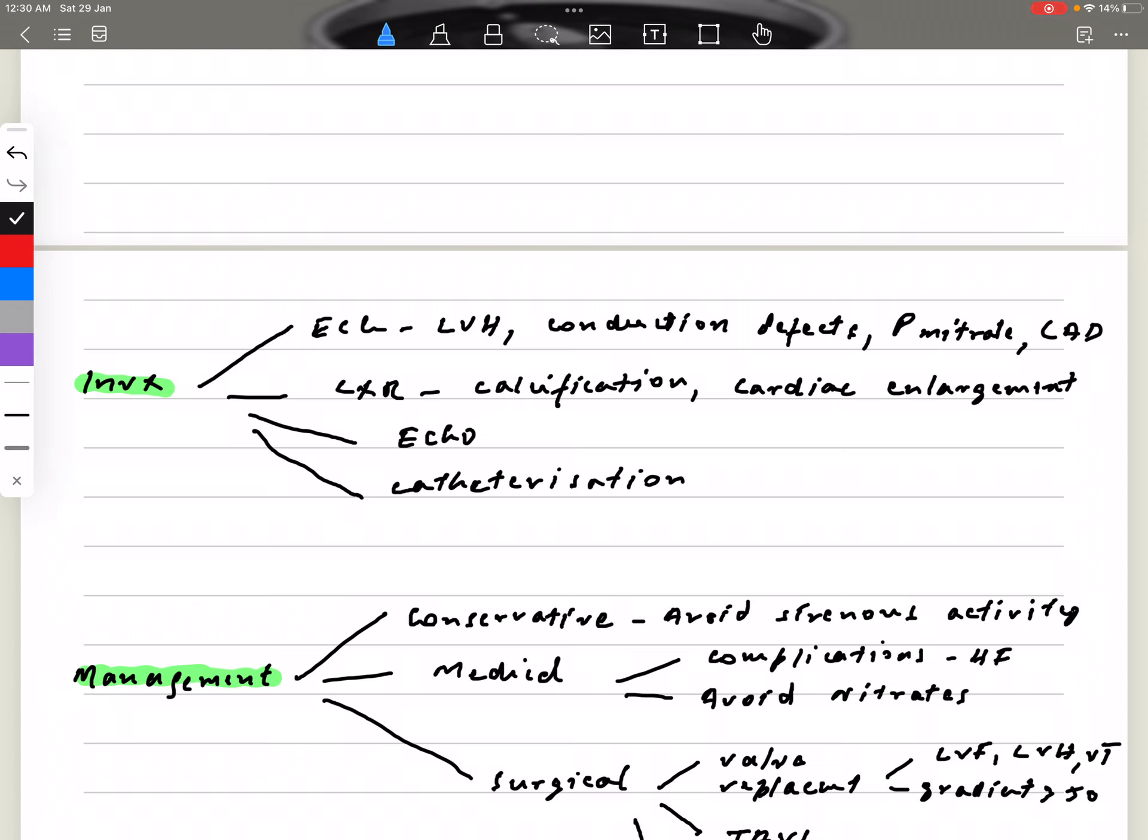Catheterization. Now remember, in aortic stenosis, normally there is some element of ischemic heart disease, so we must do the cardiac catheterization to look for any blocked coronary arteries, especially if we are planning for surgery, because normally both procedures are done at the same time. We're going to do the bypass surgery along with the aortic valve replacement.